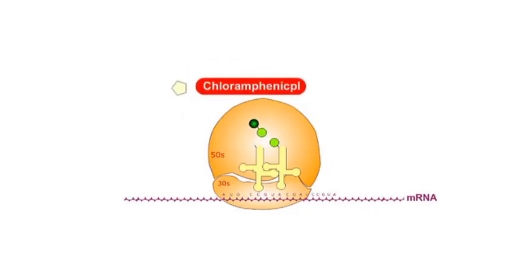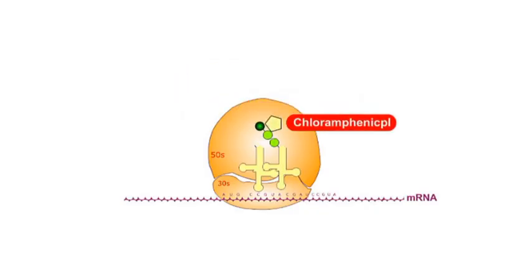Chloramphenicol inhibits the peptidyl transferase enzymes, and as a result, chloramphenicol interferes with polypeptide chain elongation.